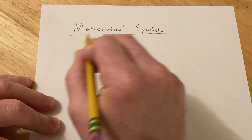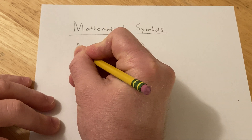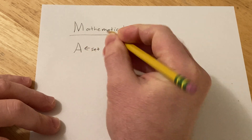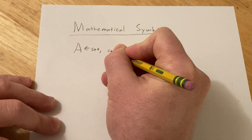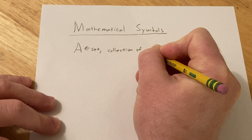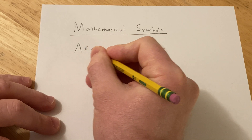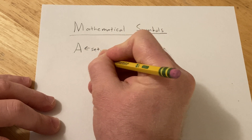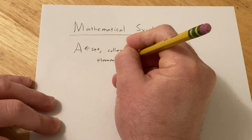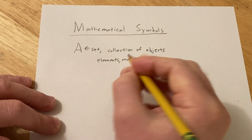First let's discuss what a set is. We're going to let A be a set. A set is basically just a collection of objects. The things that are in the set are called elements of the set — you can also call them members. Those are the things that are inside the set.